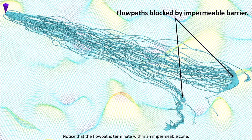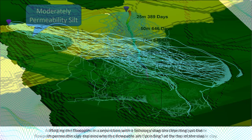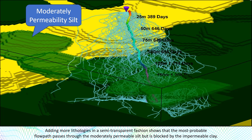Notice that the flow paths terminate within an impermeable zone. Plotting the flow paths in conjunction with the lithology diagram depicting just the impermeable clay explains why the flow paths are ponding at the top of the clay. Adding more lithologies in a semi-transparent fashion shows that the most probable flow path passes through the moderately permeable silt but is blocked by the impermeable clay.